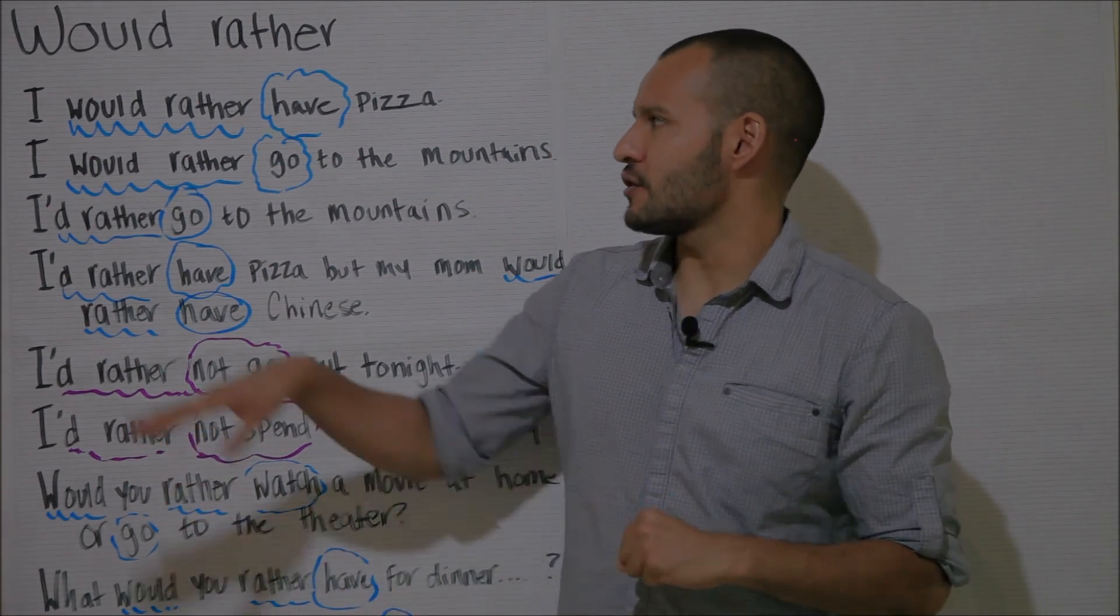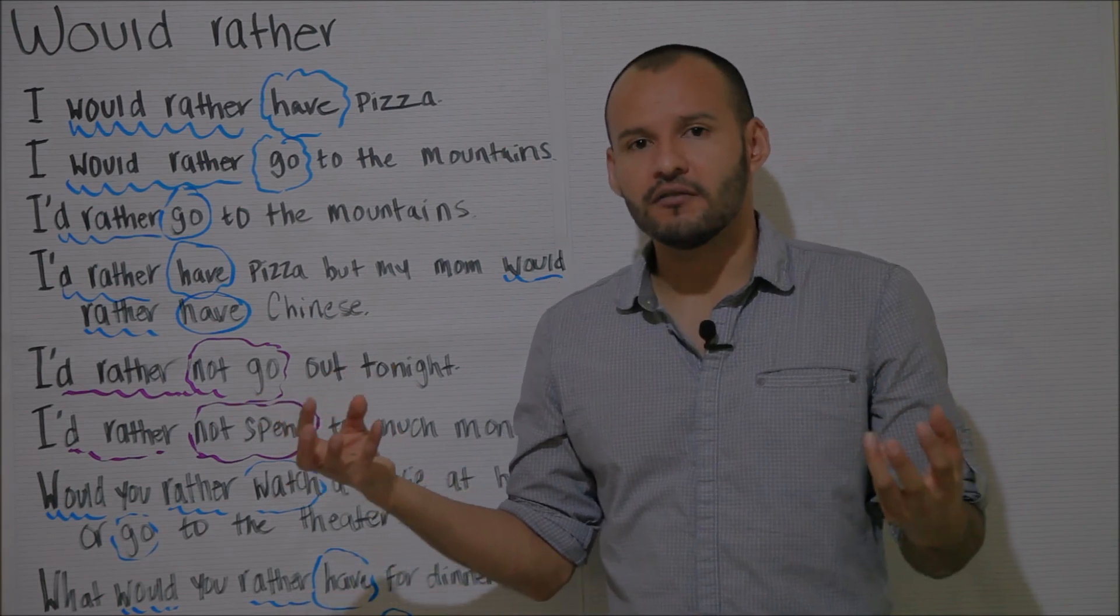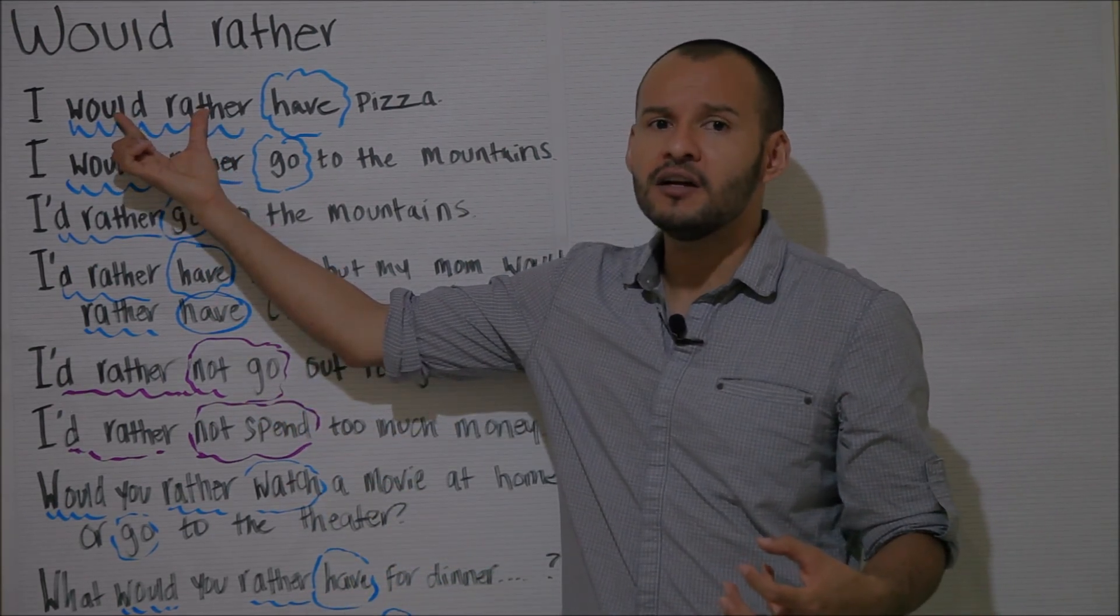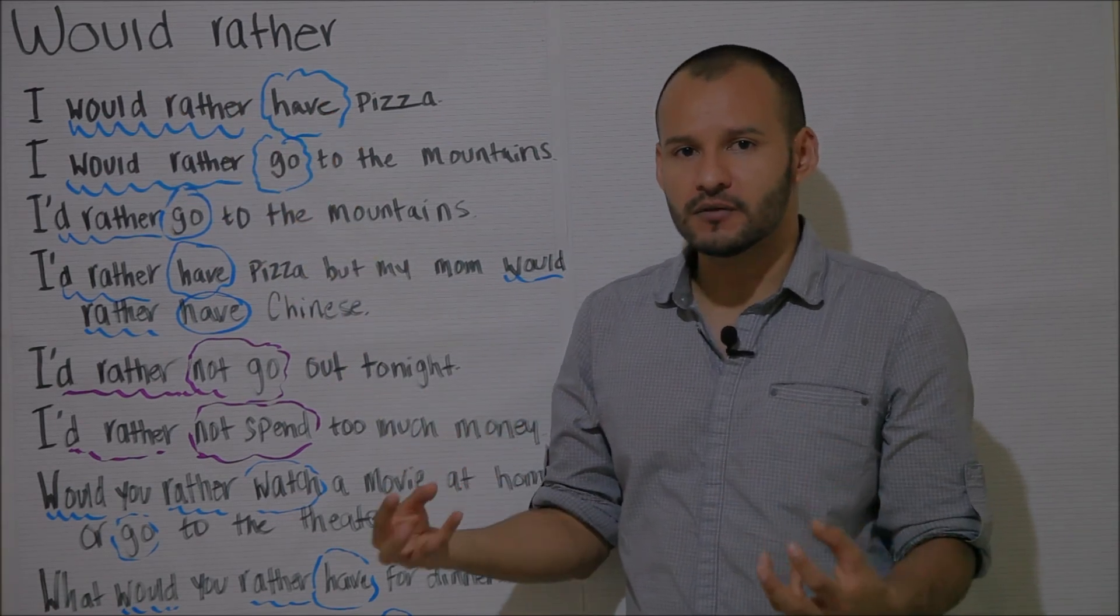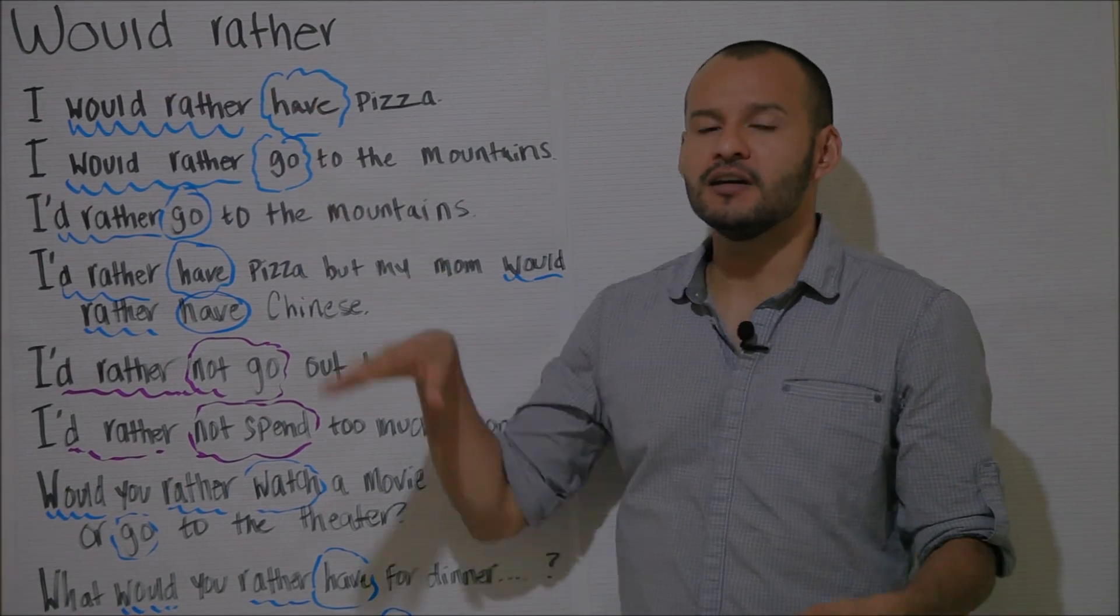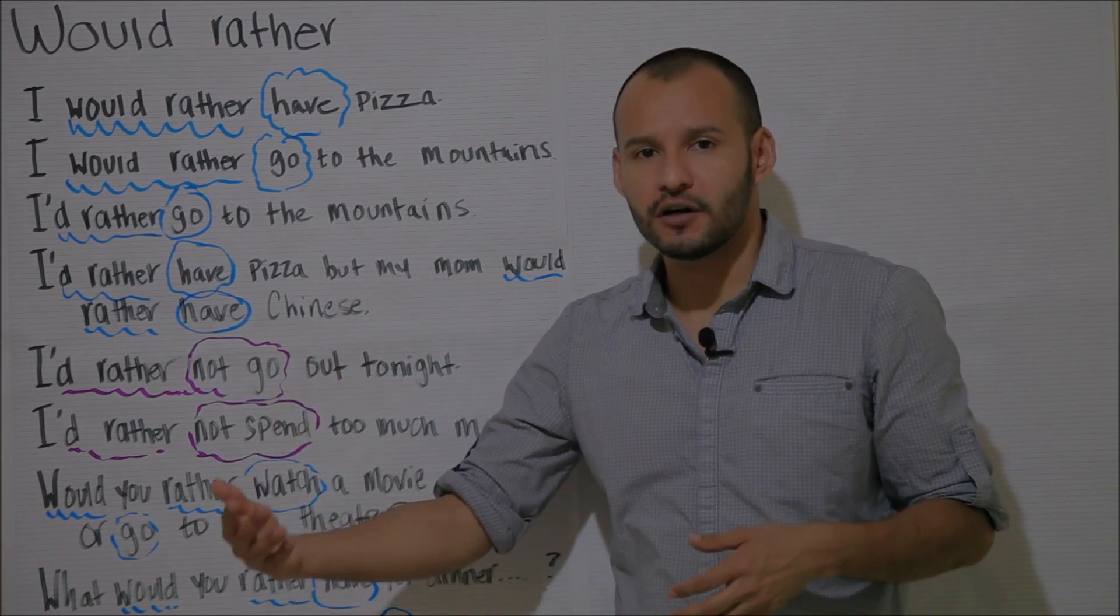So if you look at the structure, as with any sentence you need a subject and then you need a verb, and specifically here the expression would rather, and then that combines with a verb in the base form. So would rather have, and again basically this means that I prefer pizza.